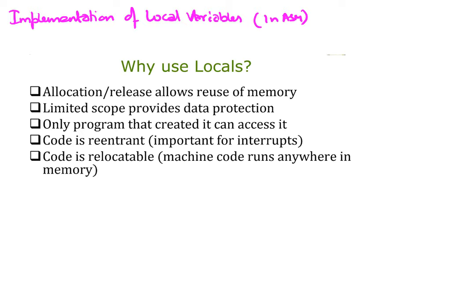Why use locals? Local variables allow us to reuse memory. Because we use the stack to allocate local variables, this becomes an area of memory that we can put our local variables on, and once we use them we release them — so memory is allocated and de-allocated as and when we use them, allowing for reuse of memory.